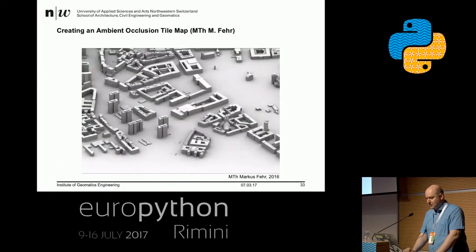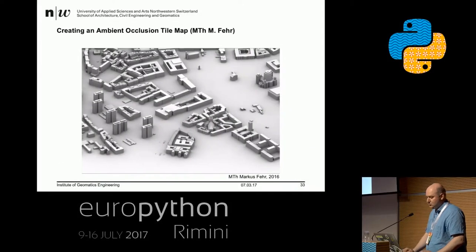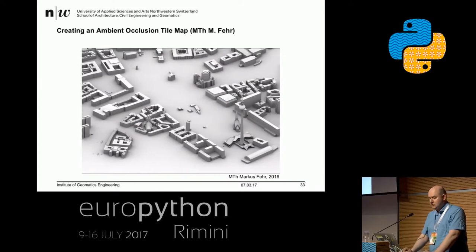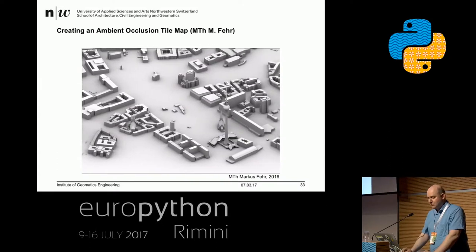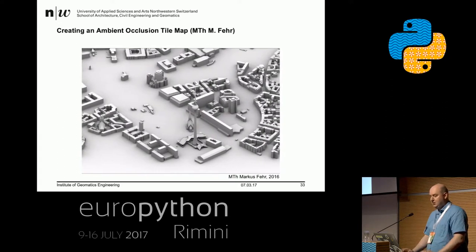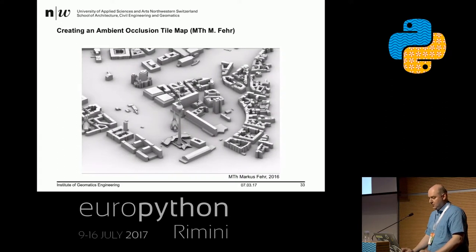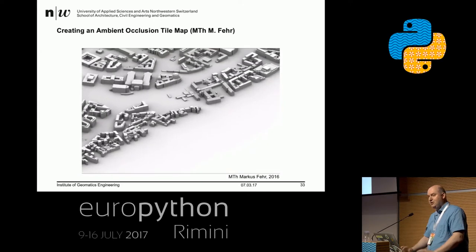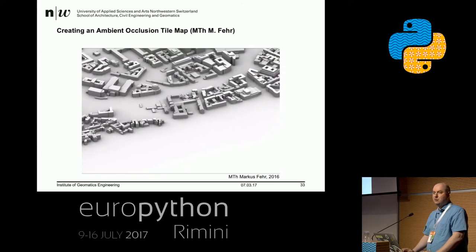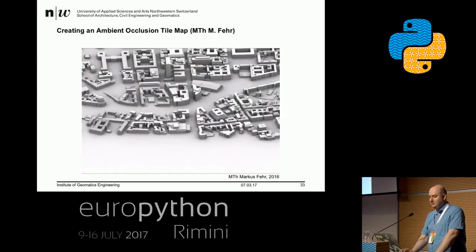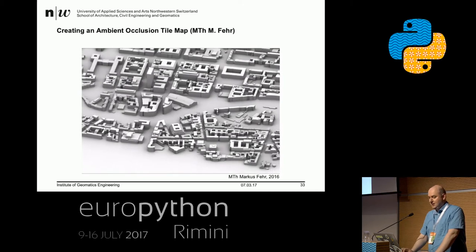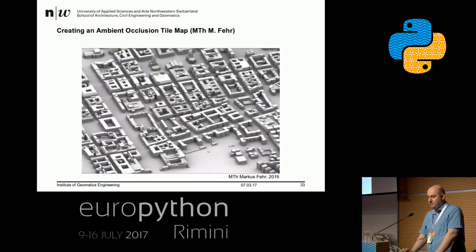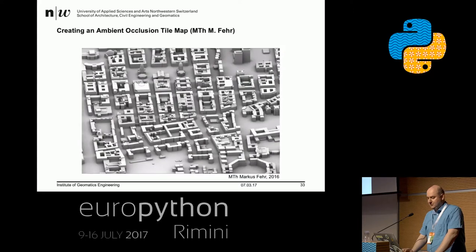We come back to the occlusion map — we want to have a map at the end. This shows how to create such a map where you can really interact with it. You can pre-calculate the rendering, and even pre-calculate some movement if you want, though you need a lot of frames. The result is a really interactive view of the city.